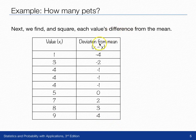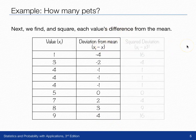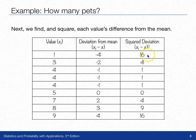Then we're going to take those differences from the mean, those deviations, and square them. So negative four becomes 16, negative two becomes four, one squared—all of these become ones, and so on.